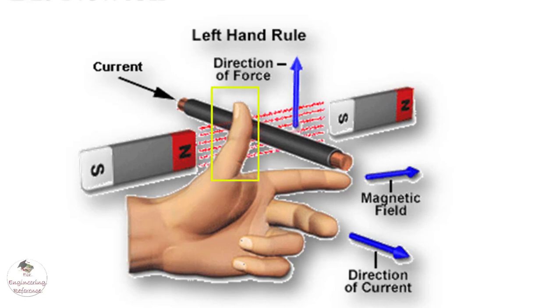Thumb indicates it points towards the direction of force, F. Middle finger is representing the direction of the current, I. And the index finger represents the direction of the magnetic field, B.